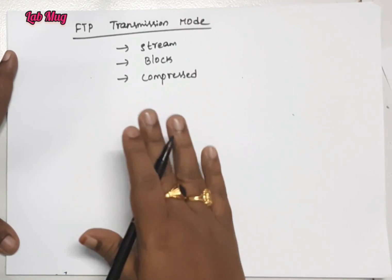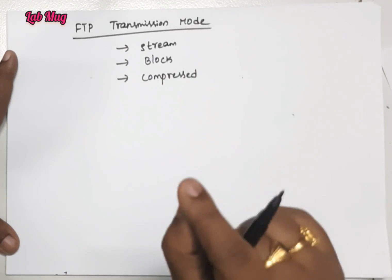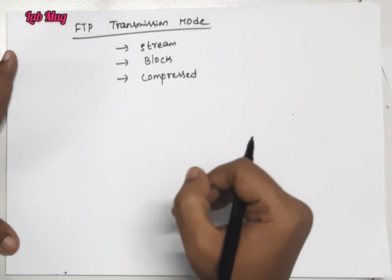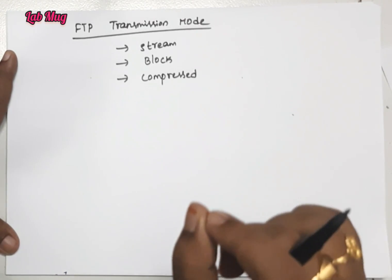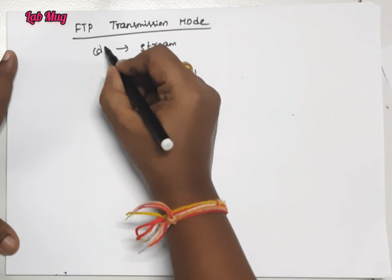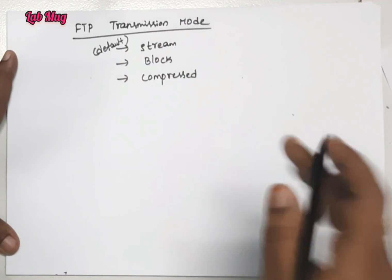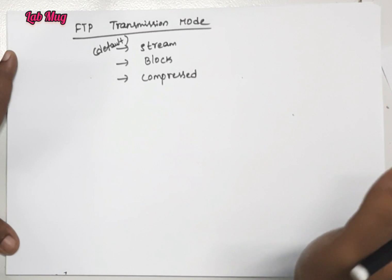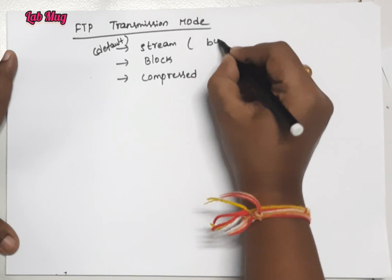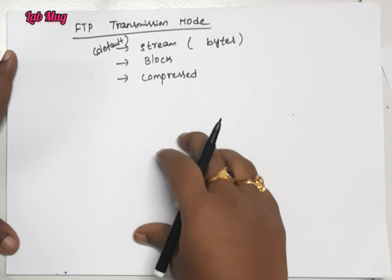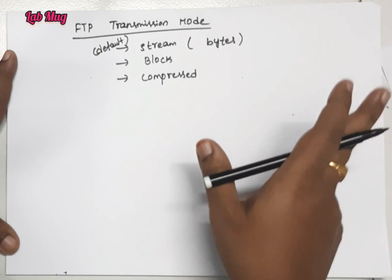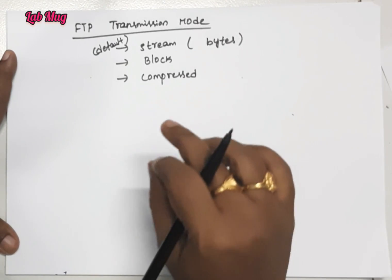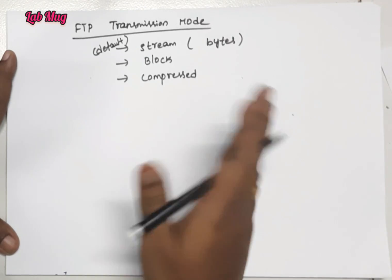First of all, we need to transfer the file from one host to another host - that is the purpose of transmission modes. Stream mode is the default mode. If you do not select any particular mode, by default we transfer the data in stream mode. In stream mode, we transfer bytes - that is, in the form of streams of bytes. The data file is transferred to TCP, that is Transmission Control Protocol. So in stream mode, we transfer data in bytes format to TCP.